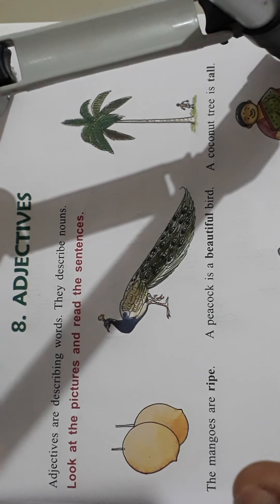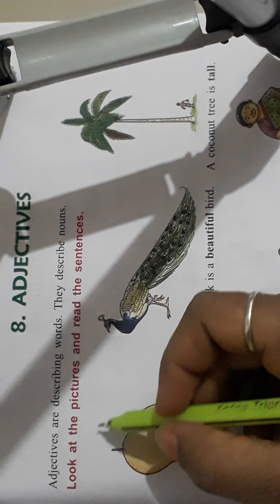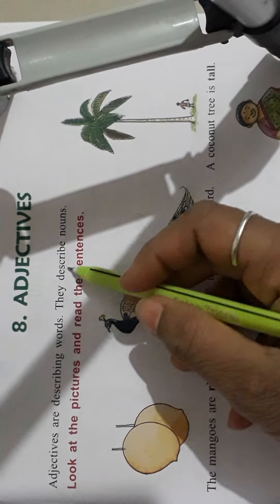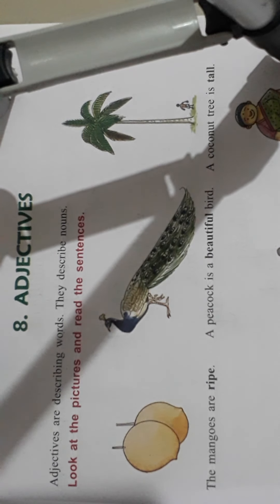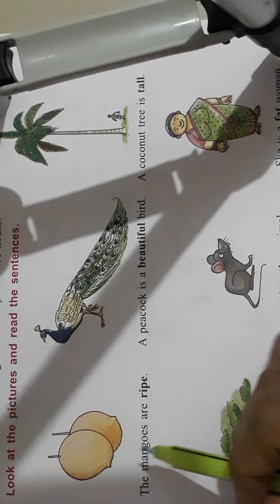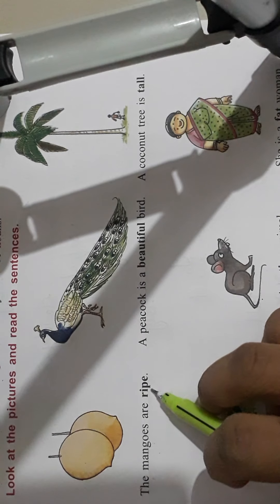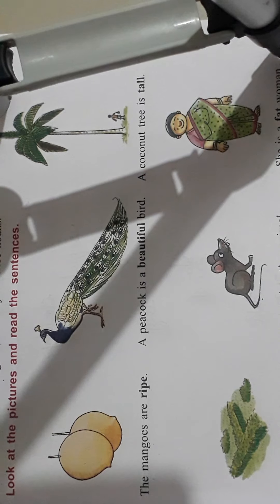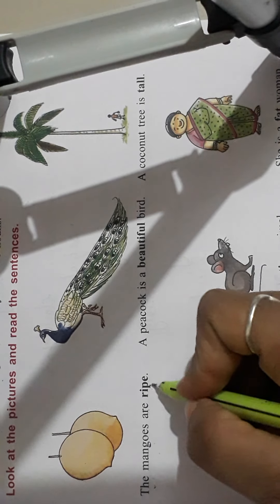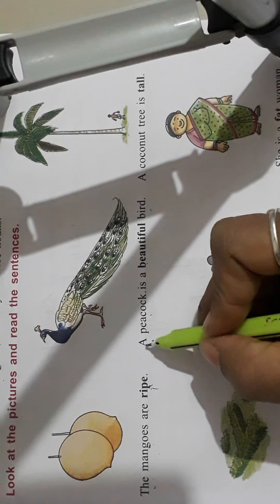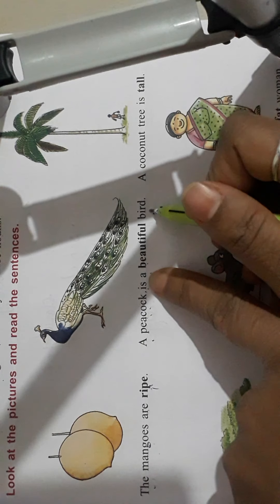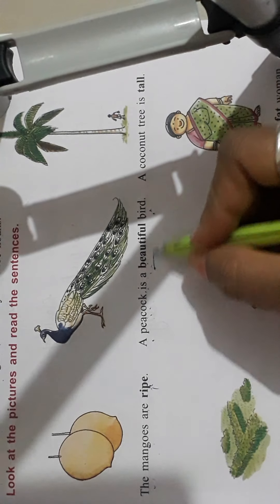In your English grammar notebook, write this down. Adjectives are describing words — they describe nouns. Describing words means to explain something about a noun. For example: peacock is a beautiful bird. So 'beautiful' is the adjective.